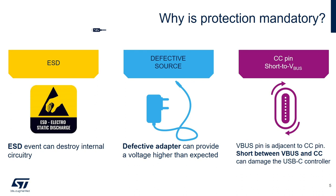Here we are addressing the potential risk of damaging your USB-C device. With a USB-C connector, we have identified three kinds of risks that can happen in the field. One, an ESD issue that can destroy internal circuitry — this is a transient very short duration, as low as a one nanosecond rise time. Two, a faulty adapter that can apply a voltage higher than the negotiated voltage — this is a DC voltage issue. And finally, number three, which is related to a potential short circuit between the V-Bus and adjacent pins.